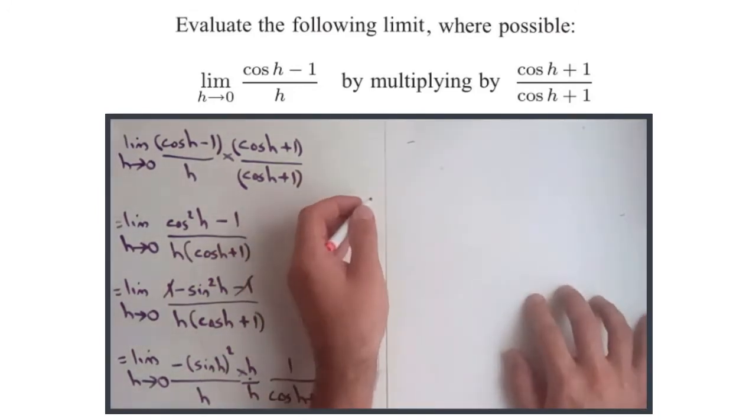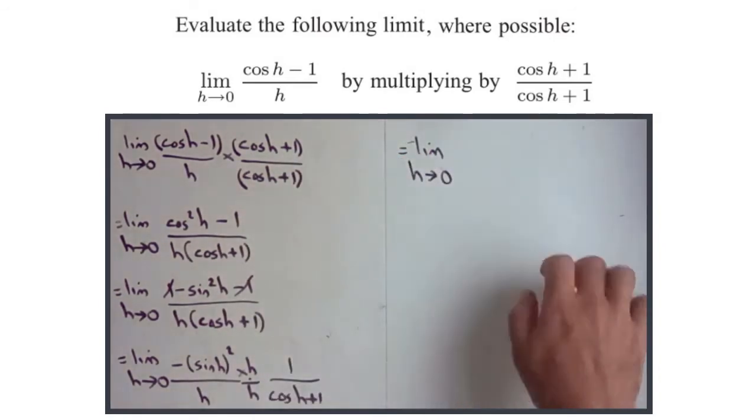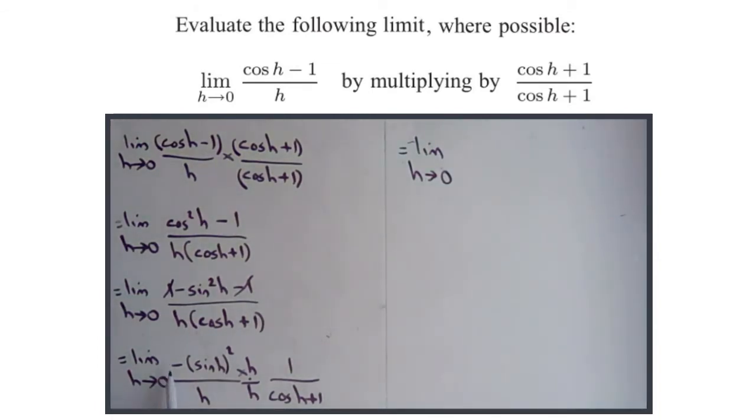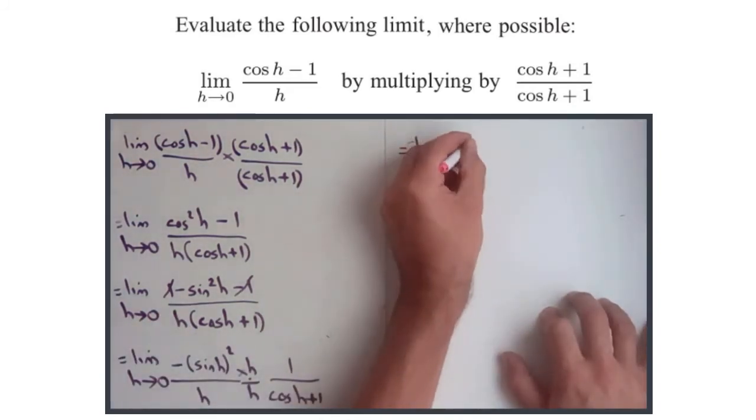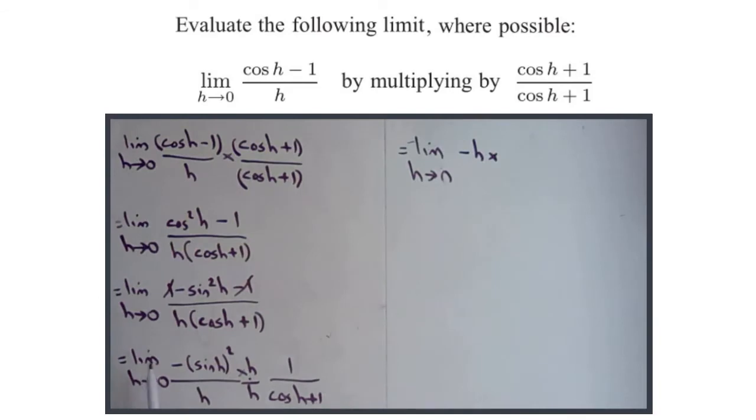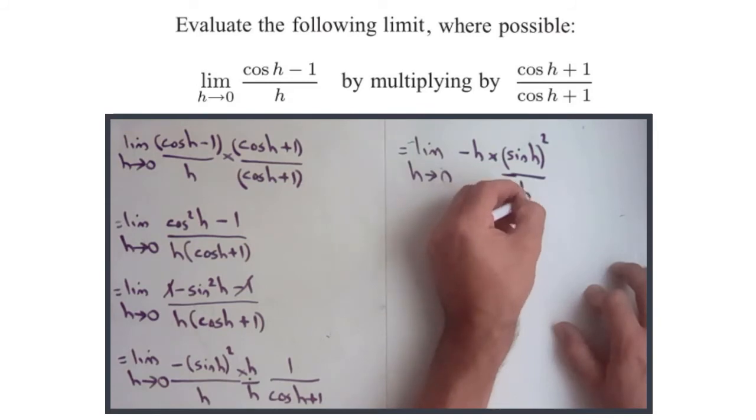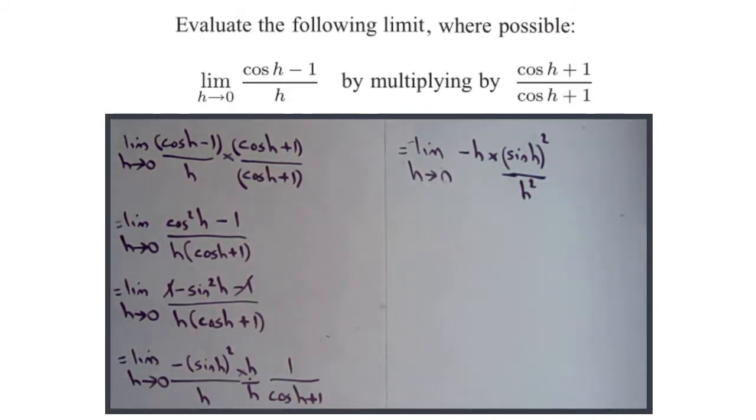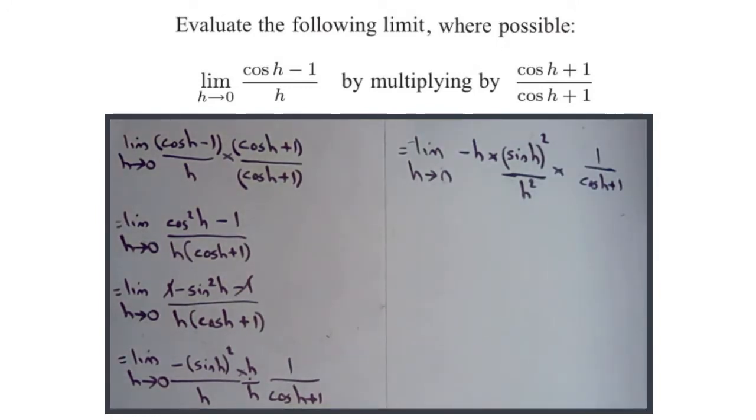So that would say equals the limit as h approaches 0 of, well you've got another h, so we could call that minus h, so we've got an h on the top that we've just created. So minus h times, and then here you've got sine h squared over h squared, sine h squared over h squared. So we'll deal with that in a sec, and then we've just got the bit we already had, times 1 over cos h plus 1, which we remember was just 1 half anyway.